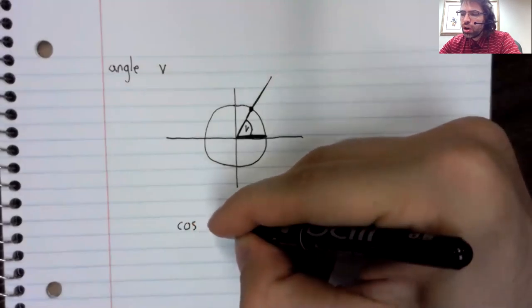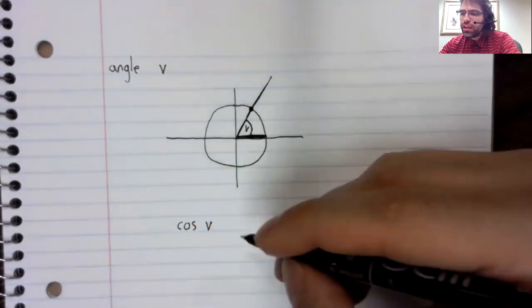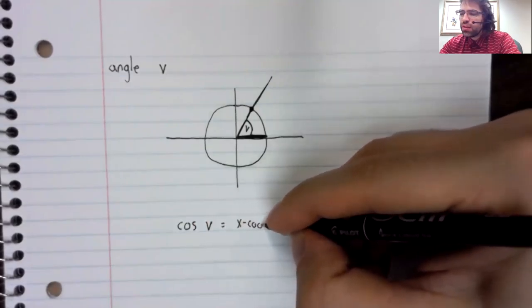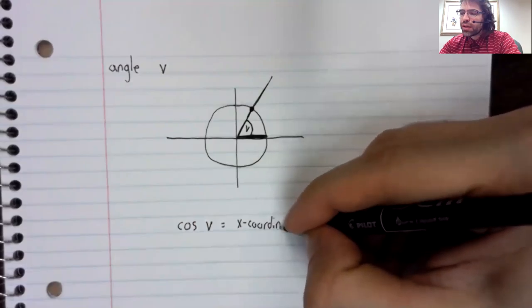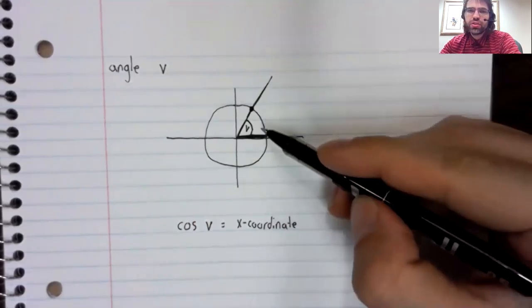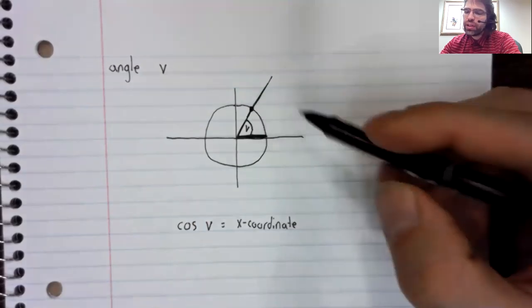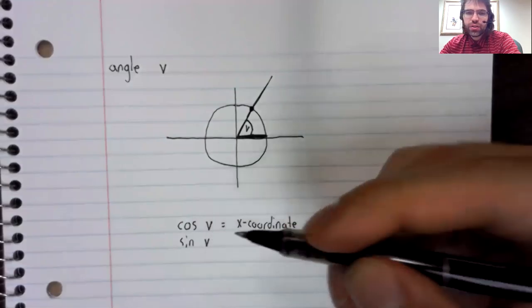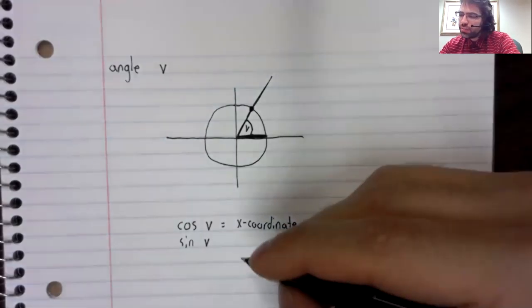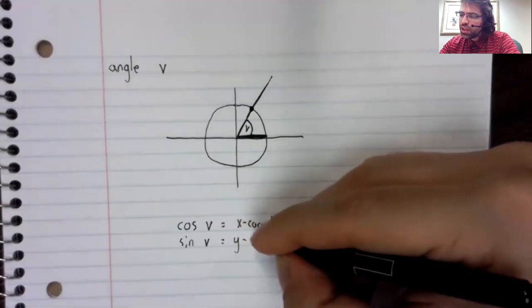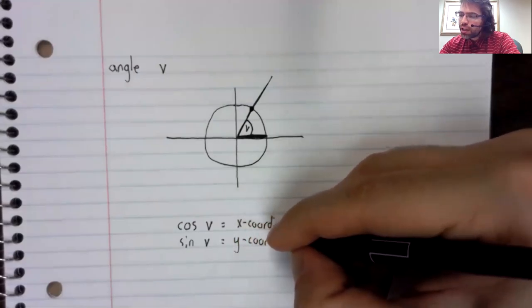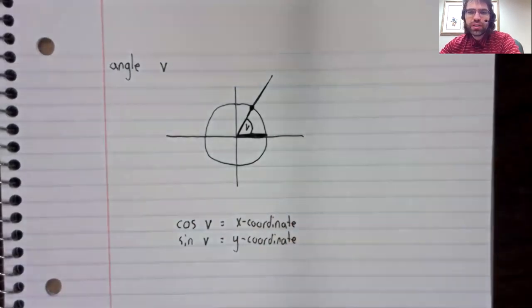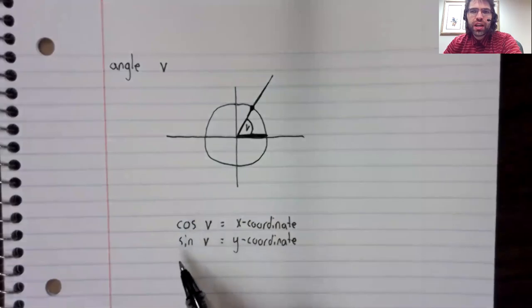The cosine of V is going to be the x-coordinate of this point. And the sine of V is going to be the y-coordinate of this point. So when you write these down,